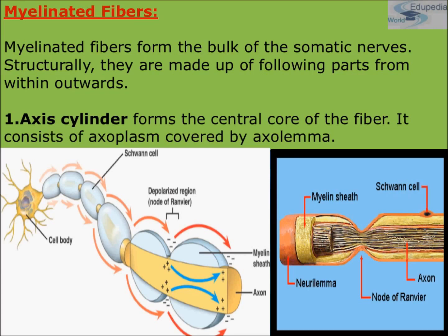Myelinated fibers form the bulk of the somatic nerves. Structurally, from within outwards, the first part is the axis cylinder, which forms the central core of the fiber. It consists of axoplasm — the cytoplasm of the axon — which is covered by the axolemma, a membrane-like structure. This axis cylinder forms the essential central core of the fiber.